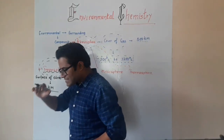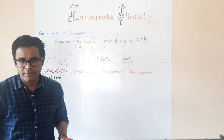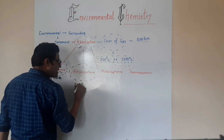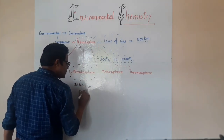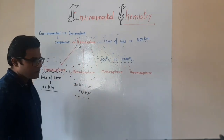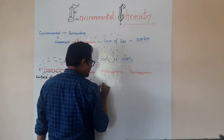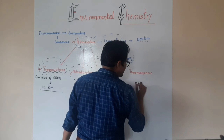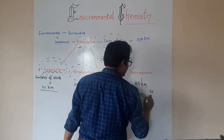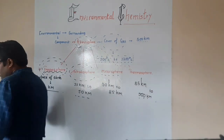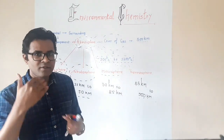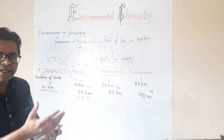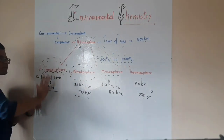The troposphere starts right from the surface of the Earth to 11 kilometers in altitude. The stratosphere continues from 11 kilometers to 50 kilometers in height. The mesosphere starts from 50 kilometers to 85 kilometers. Most flights — domestic or international — tend to fly within the tropospheric region.